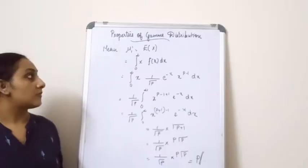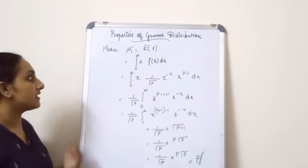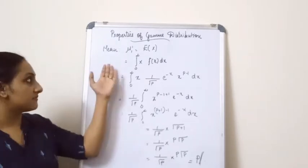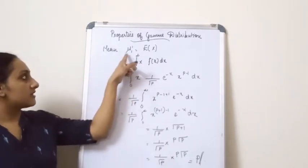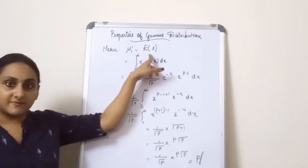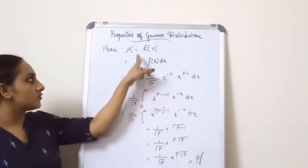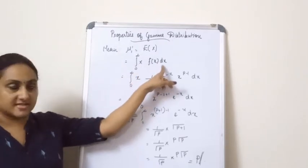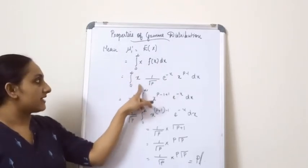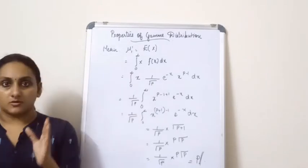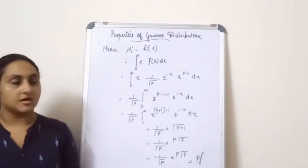Now, we will have a look at the properties of a gamma distribution. The first property we are going to study is about the mean of a gamma distribution. The mean is given by mu1', which is equal to the expectation of x, which is equal to the integral from 0 to infinity of x into f(x) dx. I hope you all know by now what is the density function of a gamma distribution.